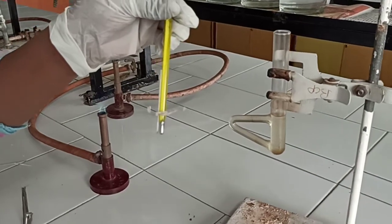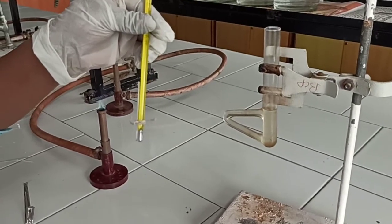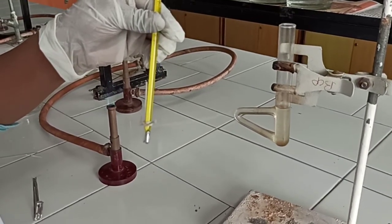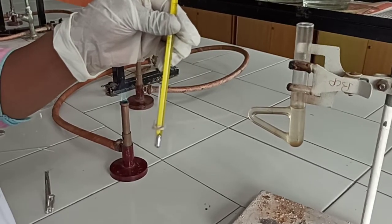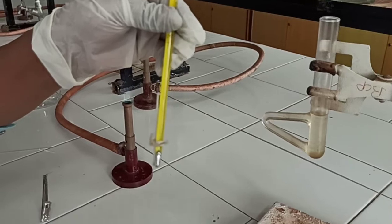Then, see the next step is that we have to tie the capillary tube containing the given sample of organic compound to the thermometer near its bulb with the help of thread or rubber ring.